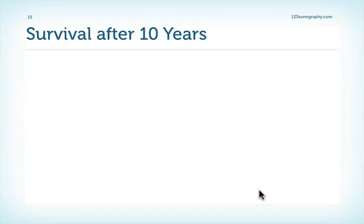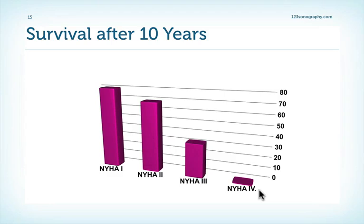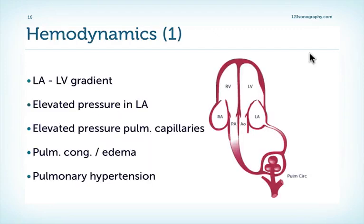The survival of the patient greatly depends on the degree of symptoms. If patients are mildly or almost asymptomatic they have a very good prognosis, however if patients are in New York Heart Association class 3 or 4 they definitely need some form of treatment. The hemodynamic problem is obstruction to inflow to the left ventricle, creating a gradient between the left atrium and the left ventricle. This means elevated pressure in the left atrium, which translates to the pulmonary circulation and pulmonary capillaries, leading to pulmonary congestion and in worst cases pulmonary edema.